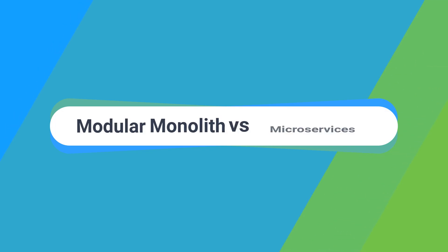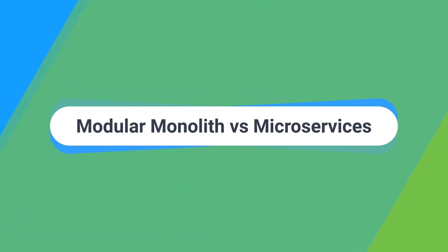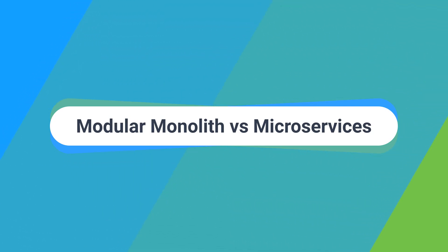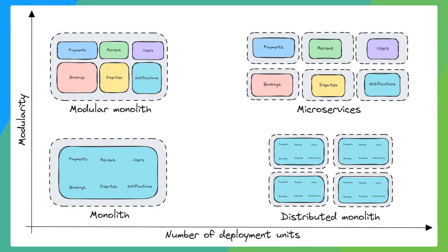The biggest difference between modular monoliths and microservices is how they're deployed. Microservices elevate the logical boundaries inside a modular monolith into physical boundaries. Microservices give you a clear strategy for modularity and decomposing the bounded contexts, but you can also achieve this without building a distributed system. The problem is people end up using microservices to enforce code boundaries; instead, you can build a modular monolith to get most of the same benefits. Modular monoliths give you high cohesion, low coupling, data encapsulation, focus on business functionalities, and more.